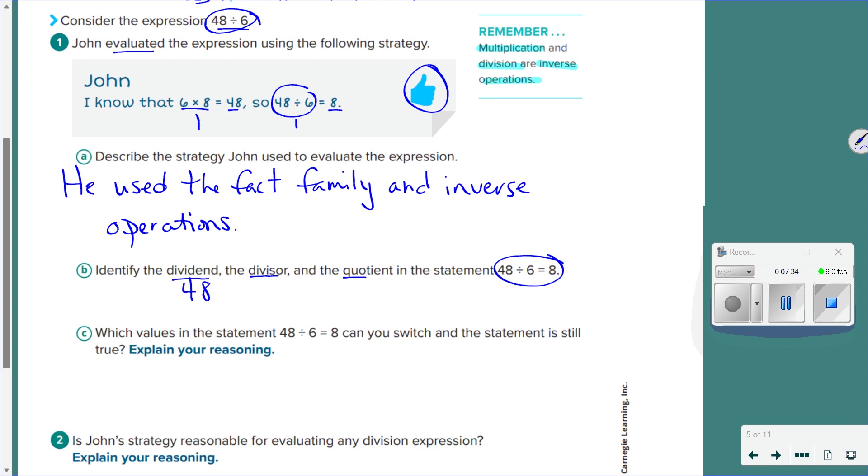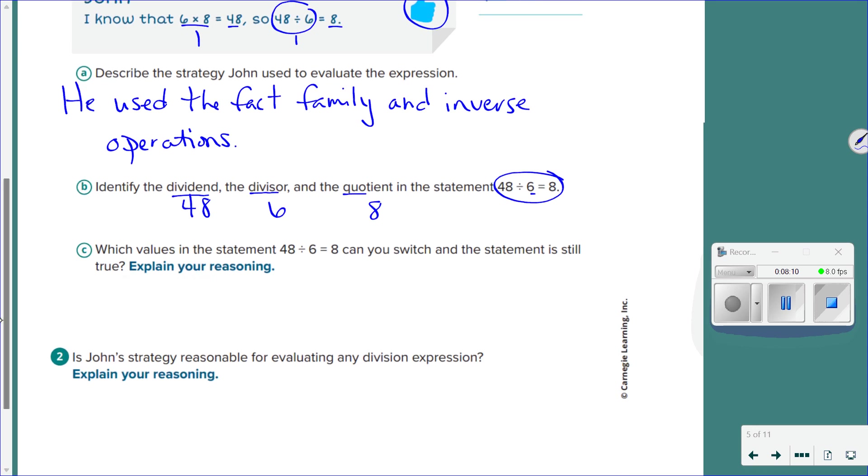Meaning our divisor is... 6. That's the number of groups that's being put into, right? So my quotient is... 8.